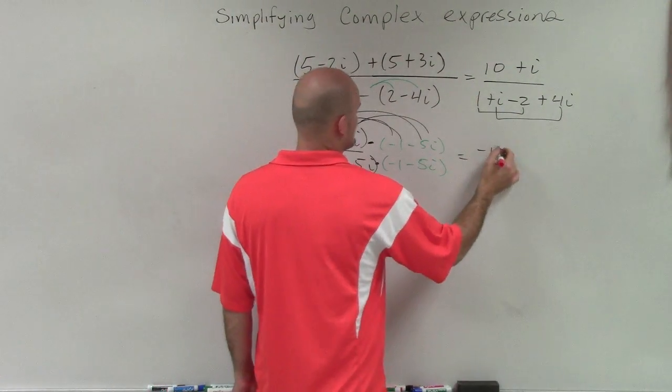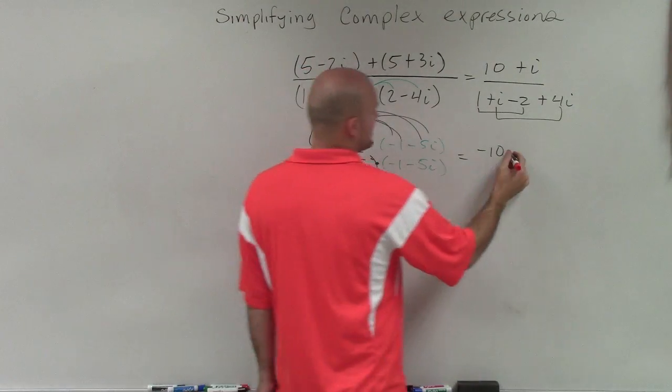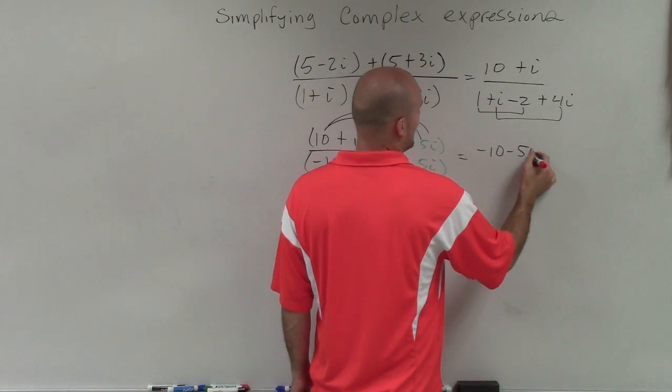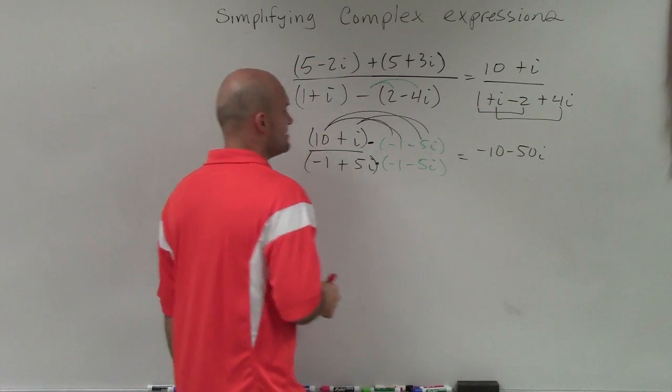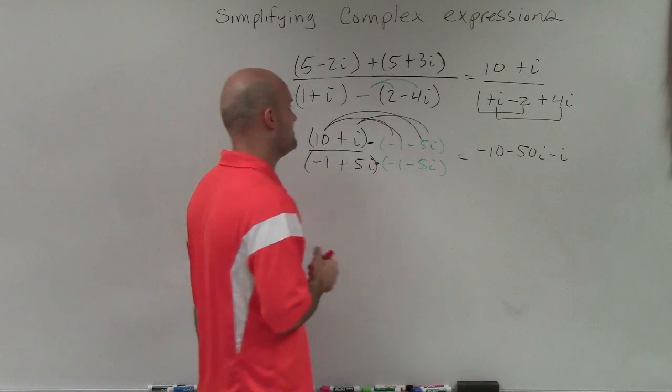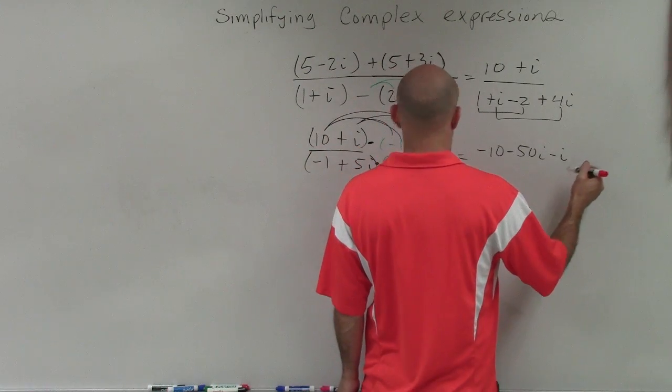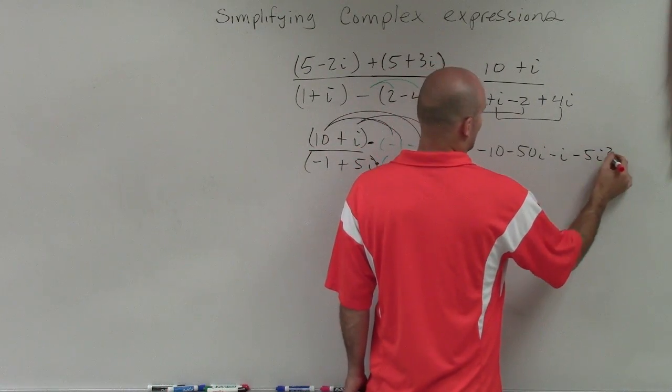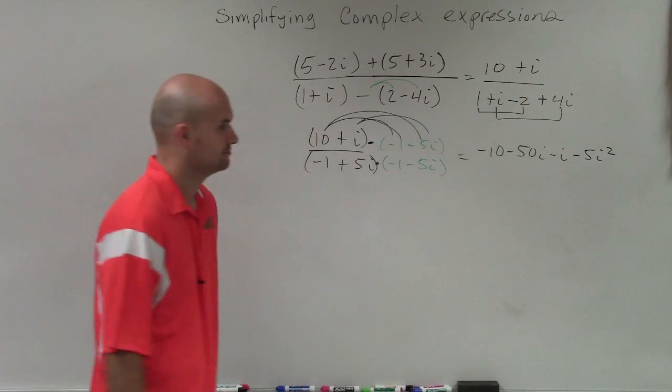10 times -1 is -10. 10 times -5i is -50i. i times -1 is -i. And i times -5i is going to be -5i squared.